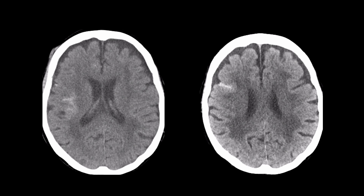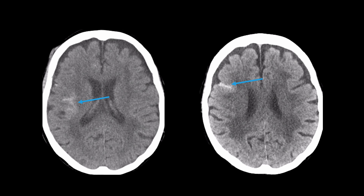Traumatic subarachnoid hemorrhage is frequently limited to a few sulci over the convexities of the brain, as in this example of a patient who struck his head on a concrete floor after a fall. But the pattern of hemorrhage alone is not sufficient to predict its cause. The nature of the traumatic injury is an important predictive factor as well.